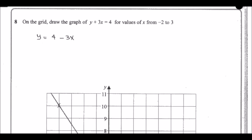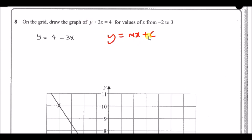Number 8: draw the graph of y + 3x = 4 for x values ranging from minus two to three. This is simply a straight line graph — a graph with mx + c form, so a single number and a single x. Because it's a straight line graph, you only need two points and then just draw a straight line.